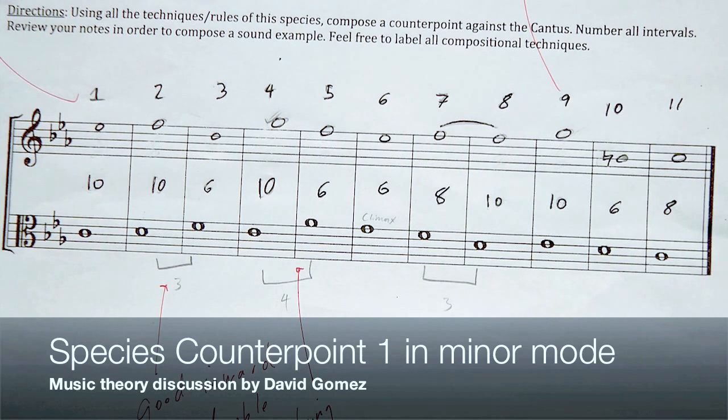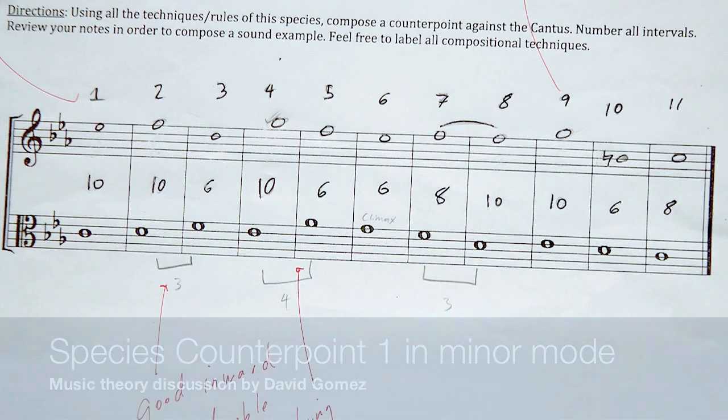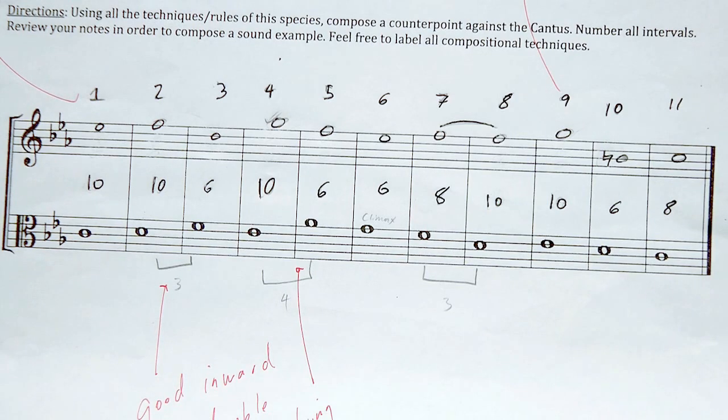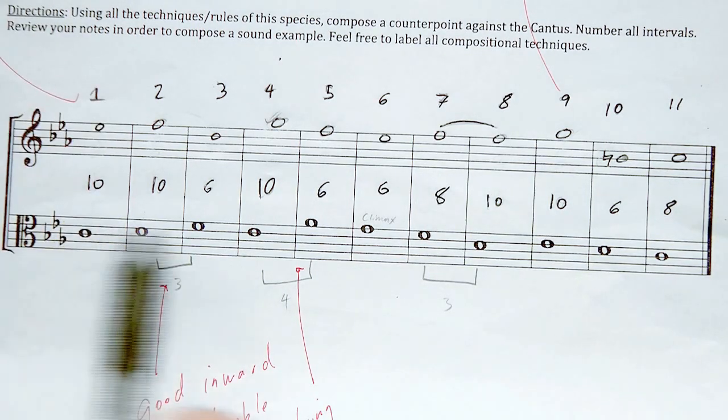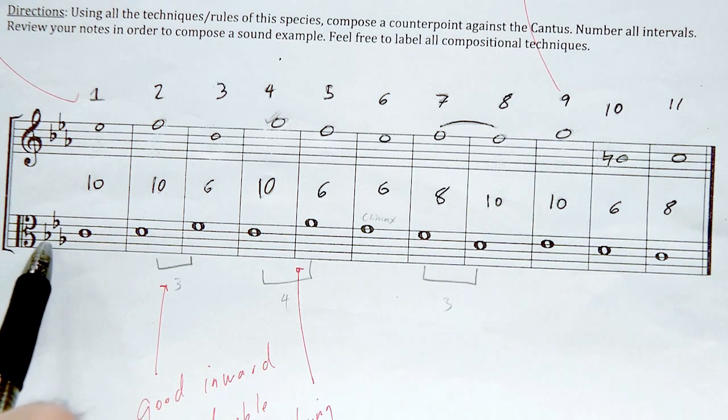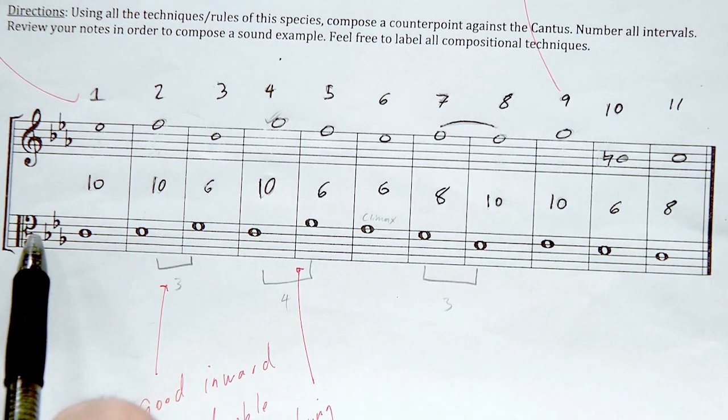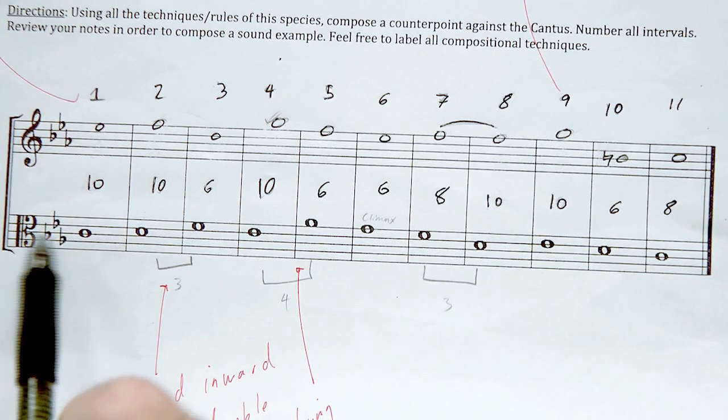Right here in front of you, you have an example of good student work in the form. We are in the key of C minor, and here's our cantus, the lower line in alto clef. C minor has three flats in it: B, E, and A. And here's your tonic tone. Let's take a listen at the cantus.